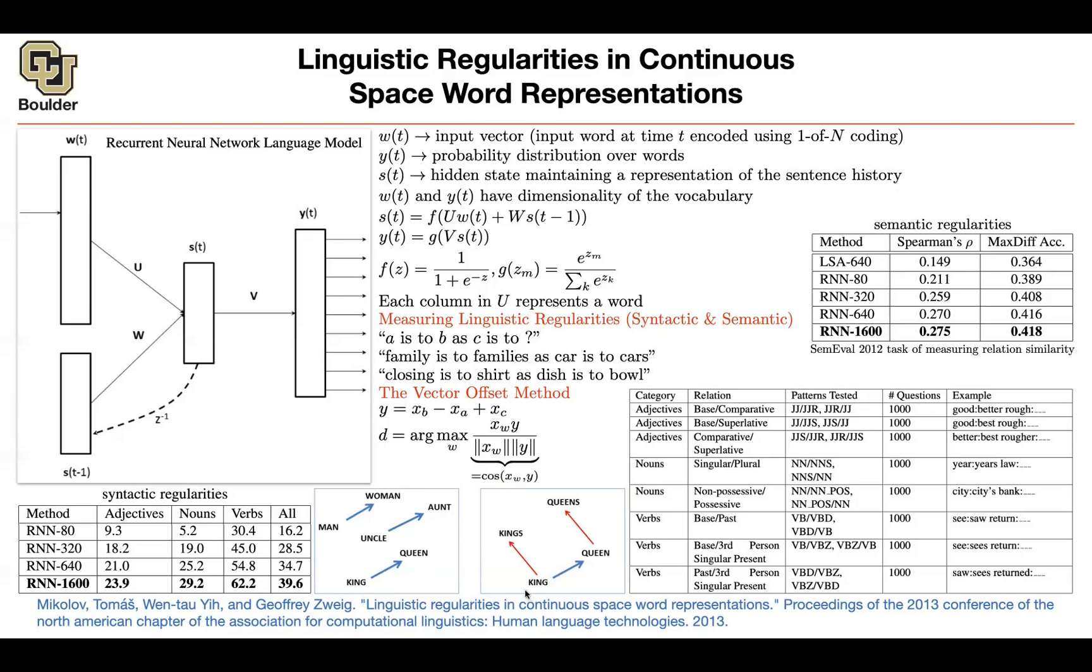Now you're going to understand why in our space of vector representations, if you add the same vector to the vector representation for the word man, uncle, or king, you're going to turn all of them into women. It's going to be a woman, aunt, and queen.